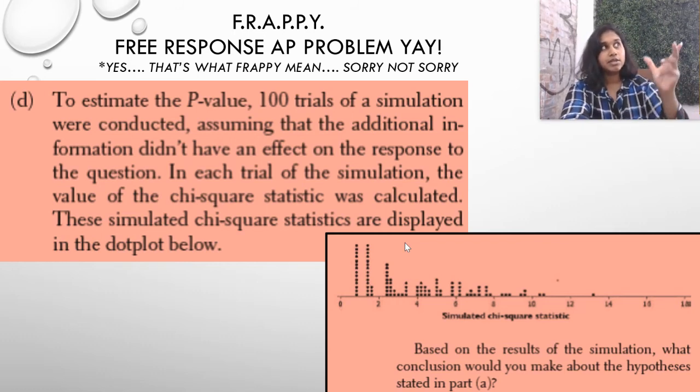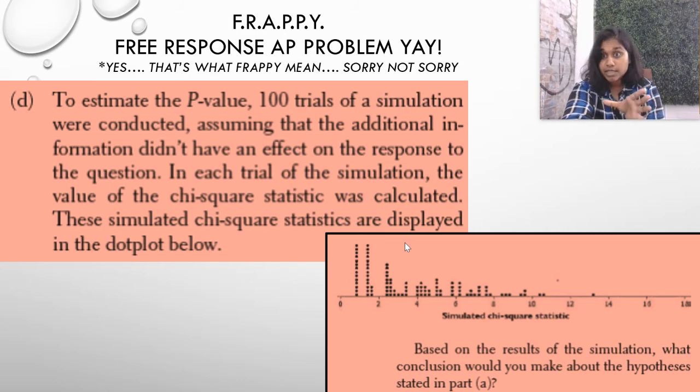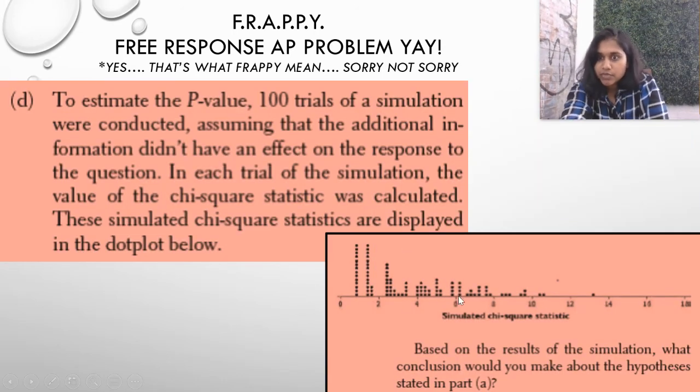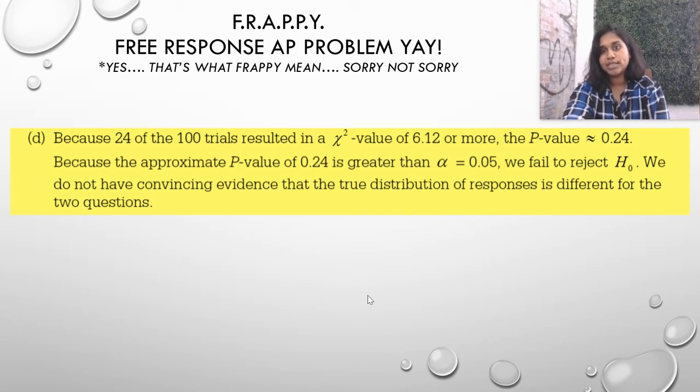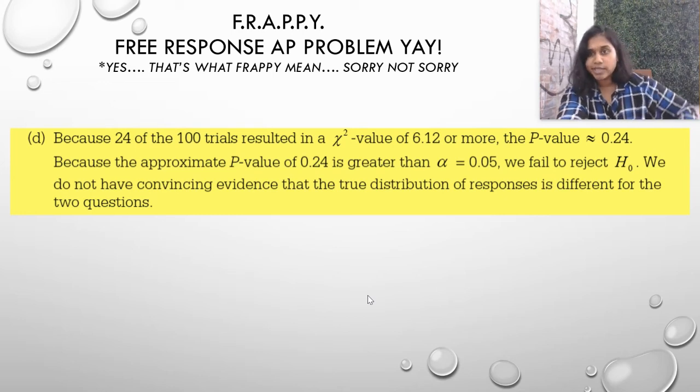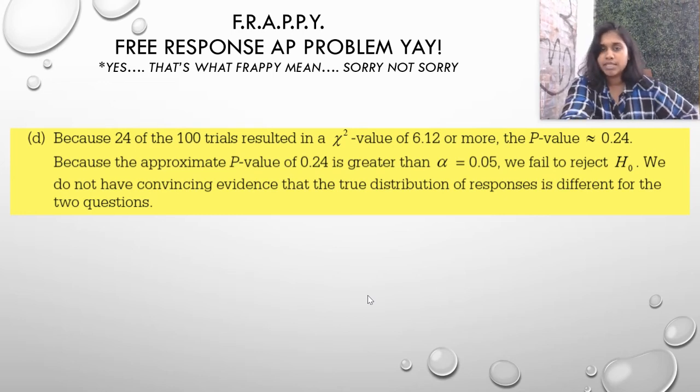Well, if you notice all those chi's, because 24 of the hundred, and I think you can count all those dots if you really wanted to, but 24 of the hundred resulted in a chi-square value of 6.12 or greater, the p-value of approximately 0.12 or 0.24 can be assumed. Because the p-value of 0.24 is greater than alpha, we would fail to reject the null. We would not have convincing evidence that the true distribution of responses is different from the two questions. And if I said reject instead of fail to reject, I'm sorry if I misspoke. I meant to say fail to reject.